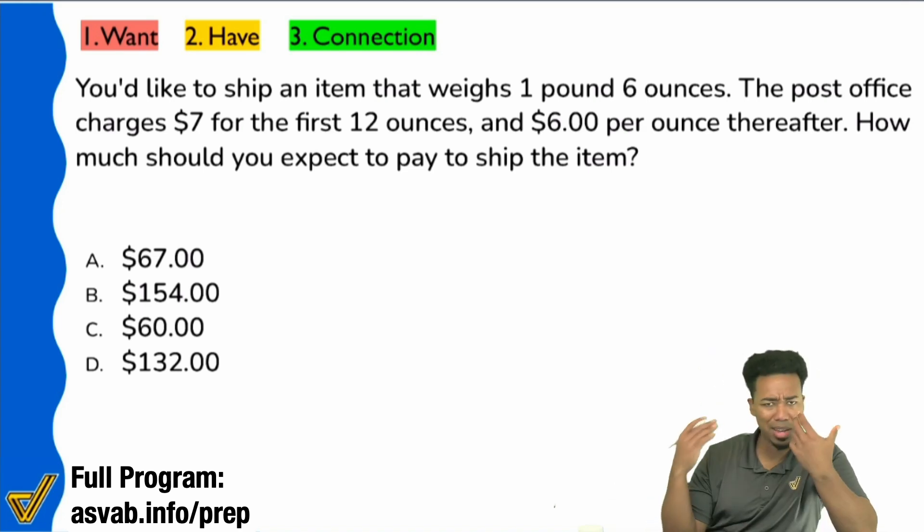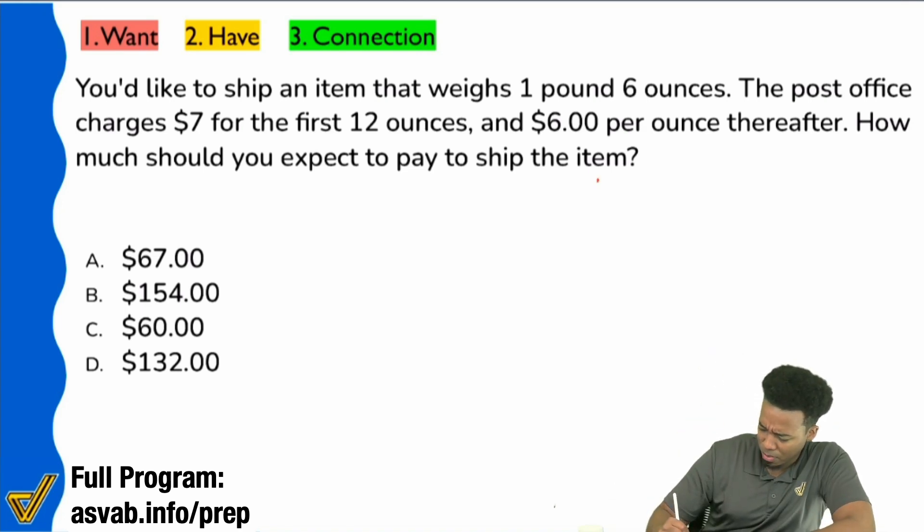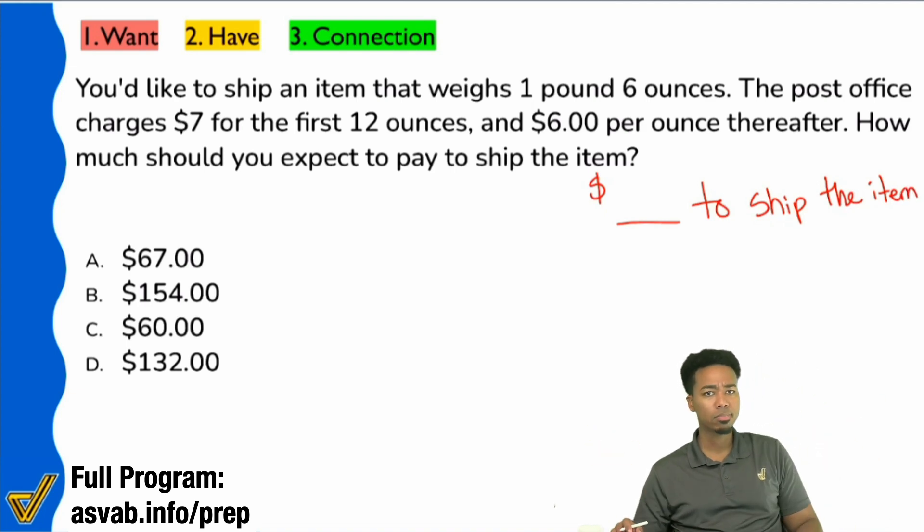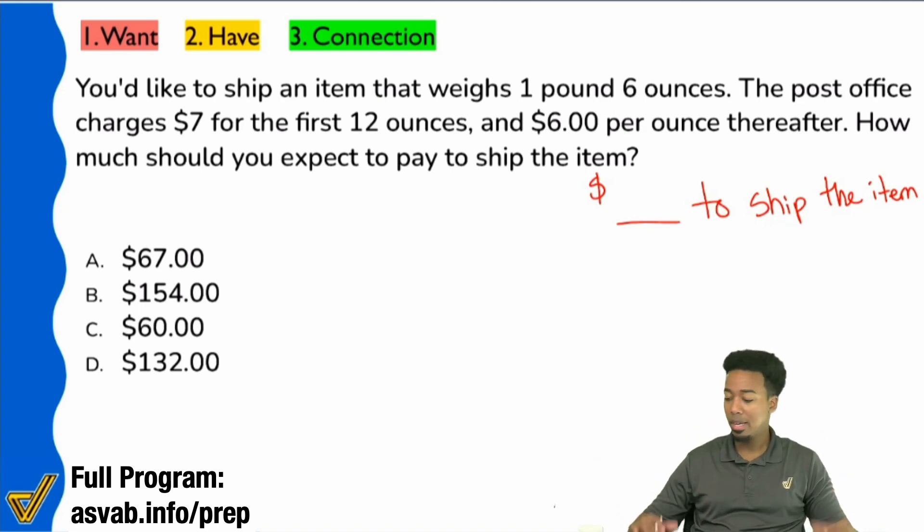So I'm going to go ahead and just in my head say, I'm looking for blank dollars to ship the item. That's what I'm trying to look for - the cost to ship it. You can call it total cost. But really what I'm trying to do is I'm trying to ship this item and I'm trying to see how much it costs. I like visualizing things. Let's read the information and see if that's true.